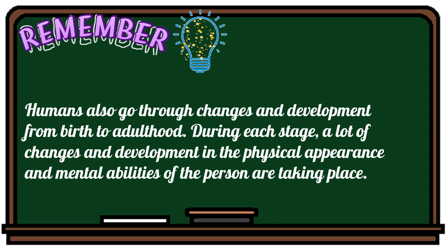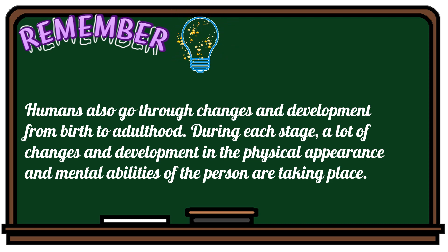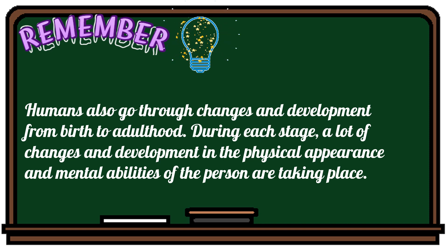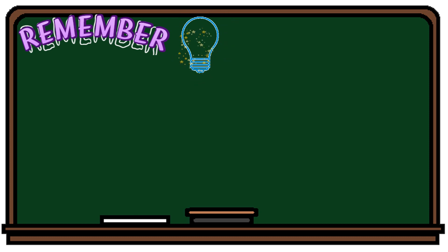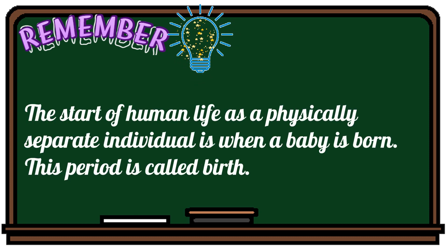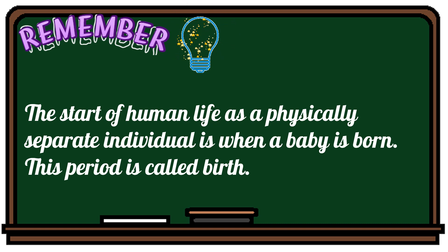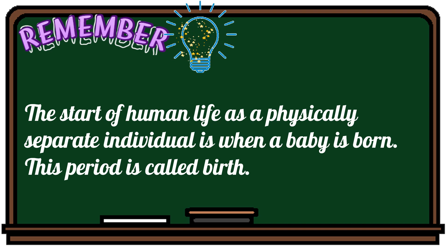Humans also go through changes and development from birth to adulthood. During each stage, a lot of changes and development in the physical appearance and mental abilities of the person take place. The start of human life as a physically separate individual is when a baby is born. This period is called birth.